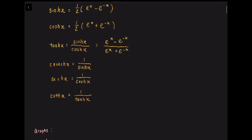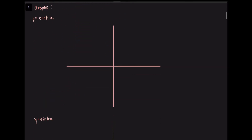Let us now look at some graphs. We obtain the graph of y equals cosh(x) by finding the mean values of a few corresponding pairs of values of y = e^x and y = e^(−x), and then plotting these mean values.